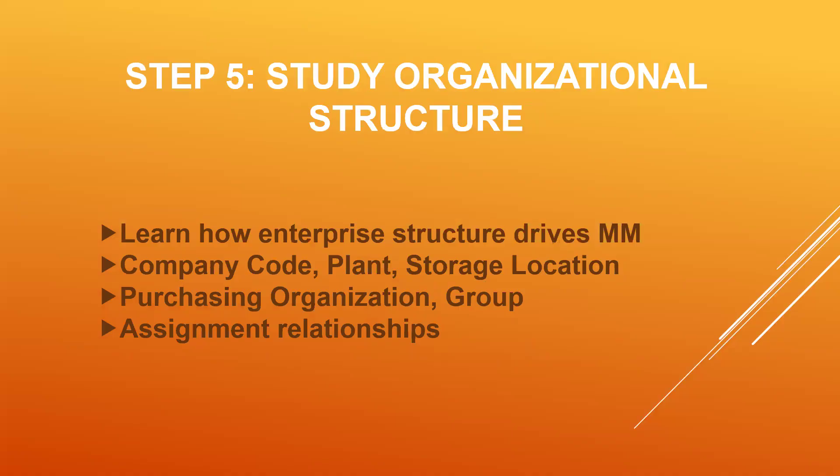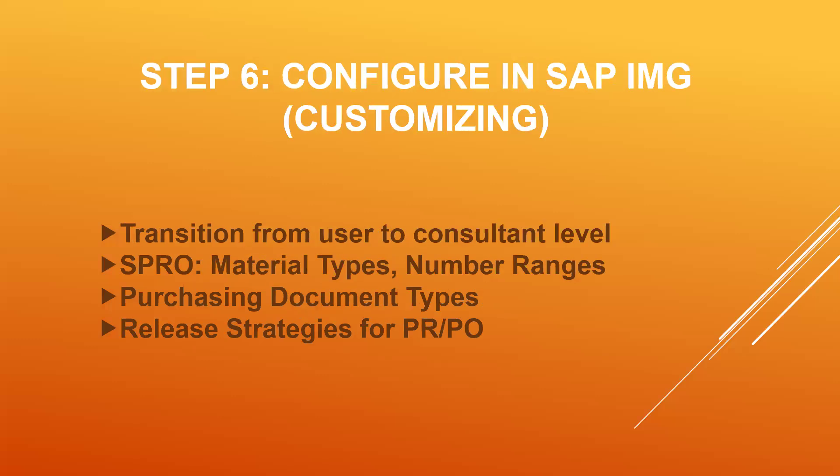Step five: study organization and customization — configurations of customization. Learn how to create enterprise structures: company, company code, plant, storage location — definitions and assignments. Next, configure in SAP IMG customization — Implementation Management Guide — this is the consultant level. Consultant level starts from step five itself.